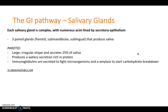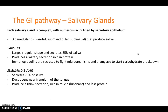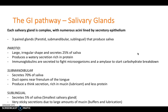Digestion begins in the mouth, particularly of carbohydrates, by the release of amylase. The submandibular gland secretes 70% of our saliva — the most of the three — and its duct opens near the frenulum of the tongue. It produces a thick secretion rich in mucin, which acts as a lubricant. The sublingual gland secretes around 5% of our saliva with very sticky secretions due to a large amount of mucin, which acts as a buffer and lubricant.